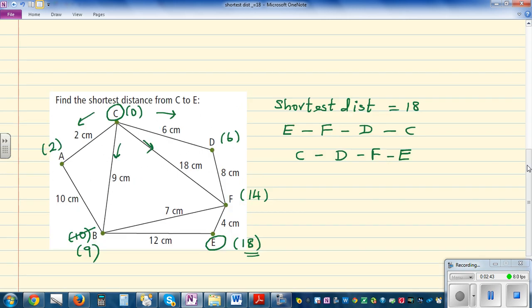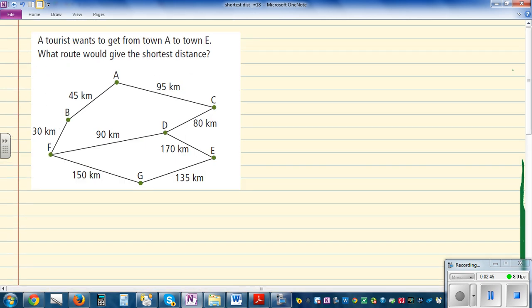Let's look at one more question. A tourist wants to go from town A to town E. This is town A and you want to go up to E. This is your start and this is your end. You have to try basically different paths and find the shortest path. There is no shortcut for this.